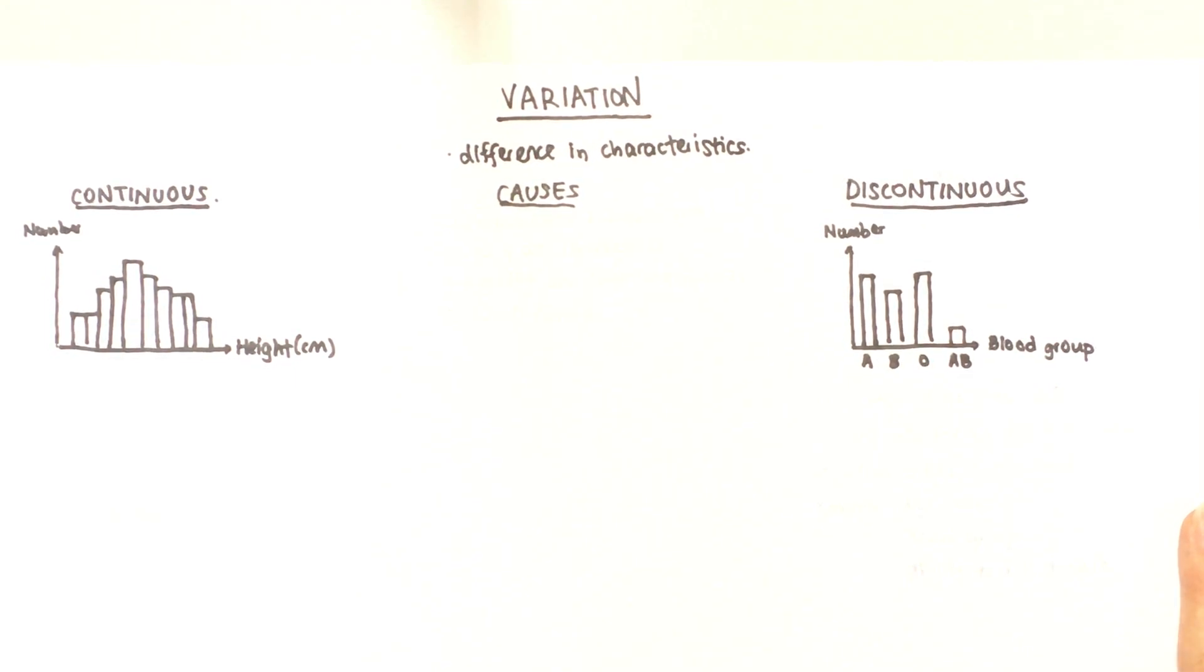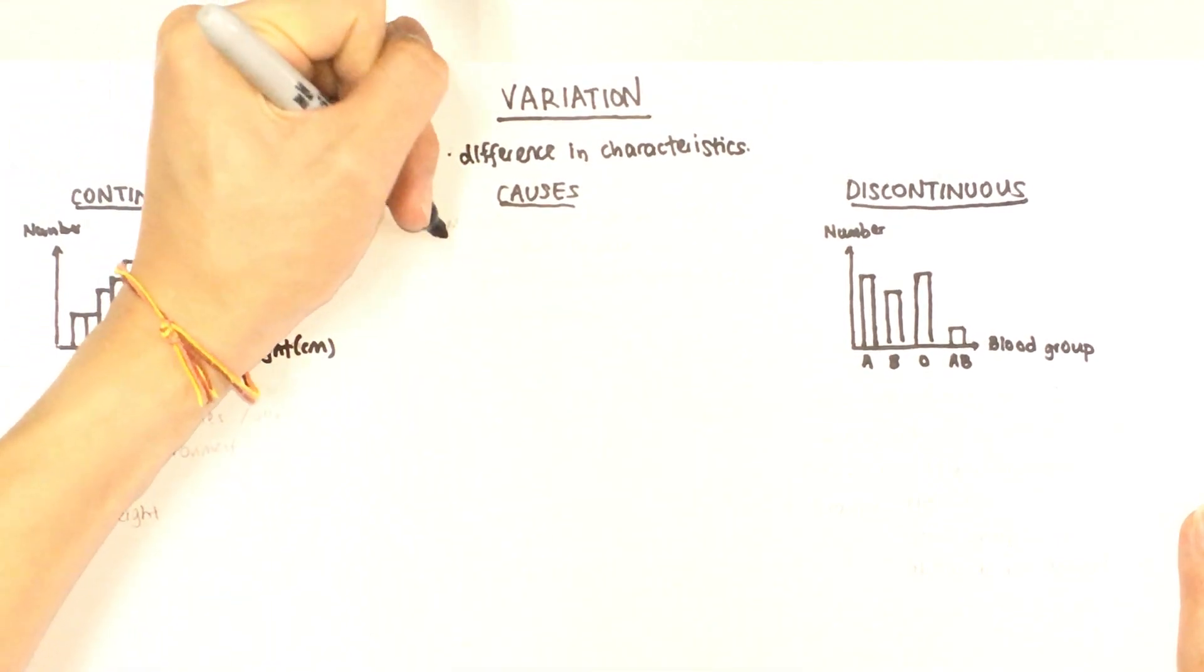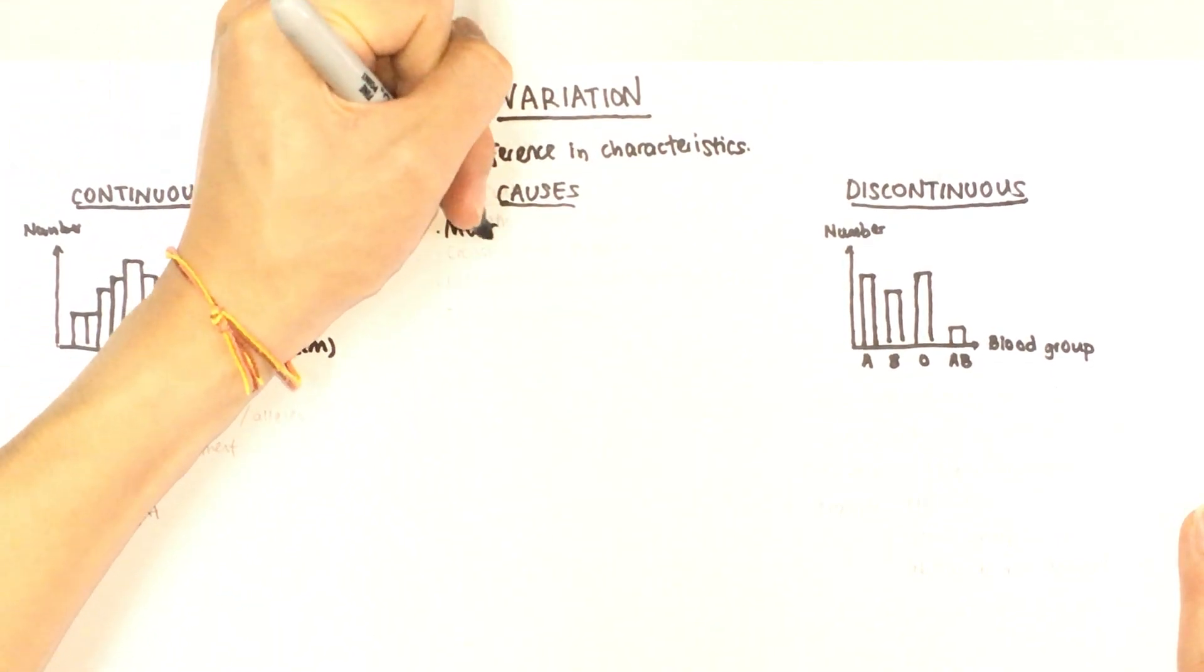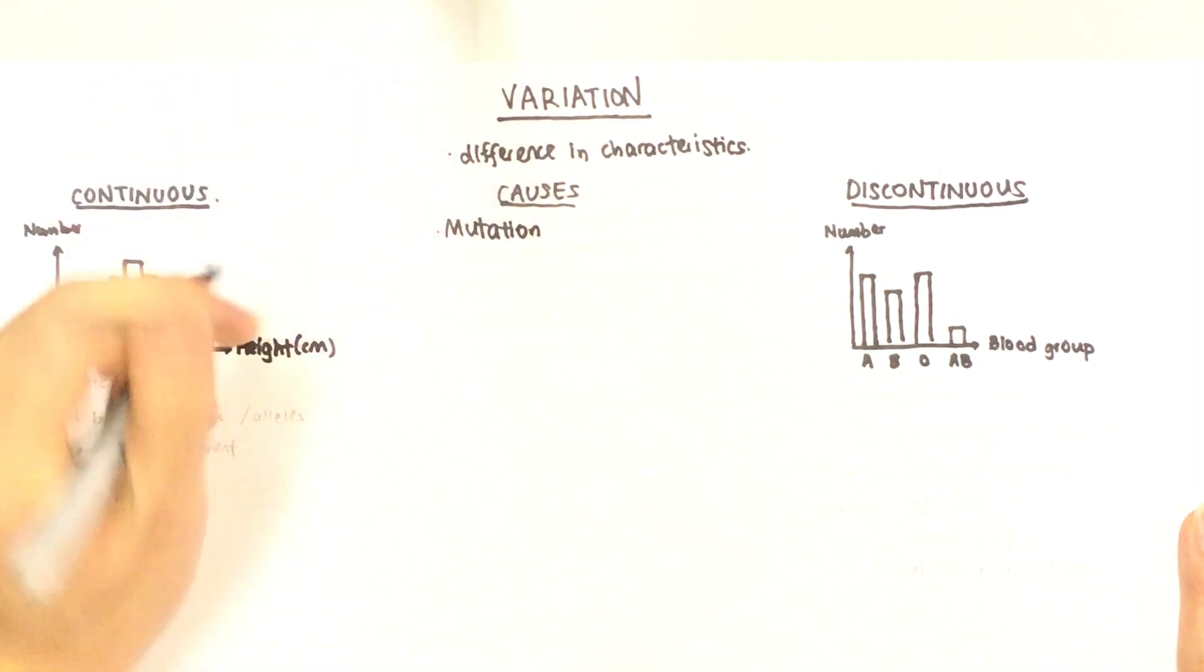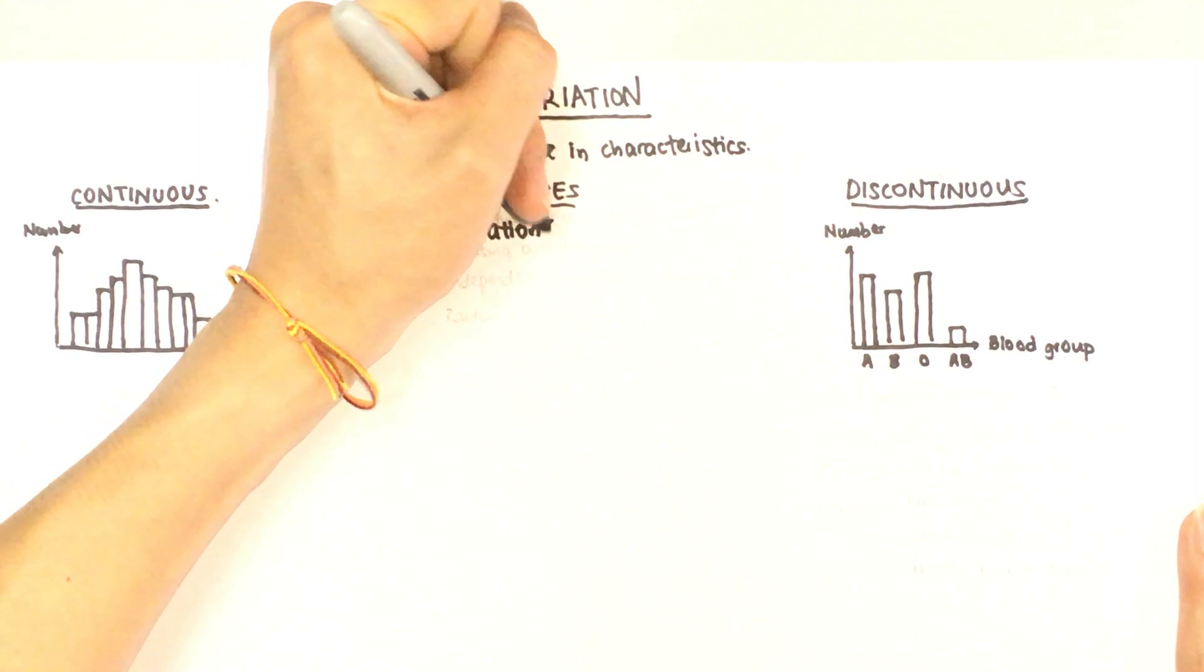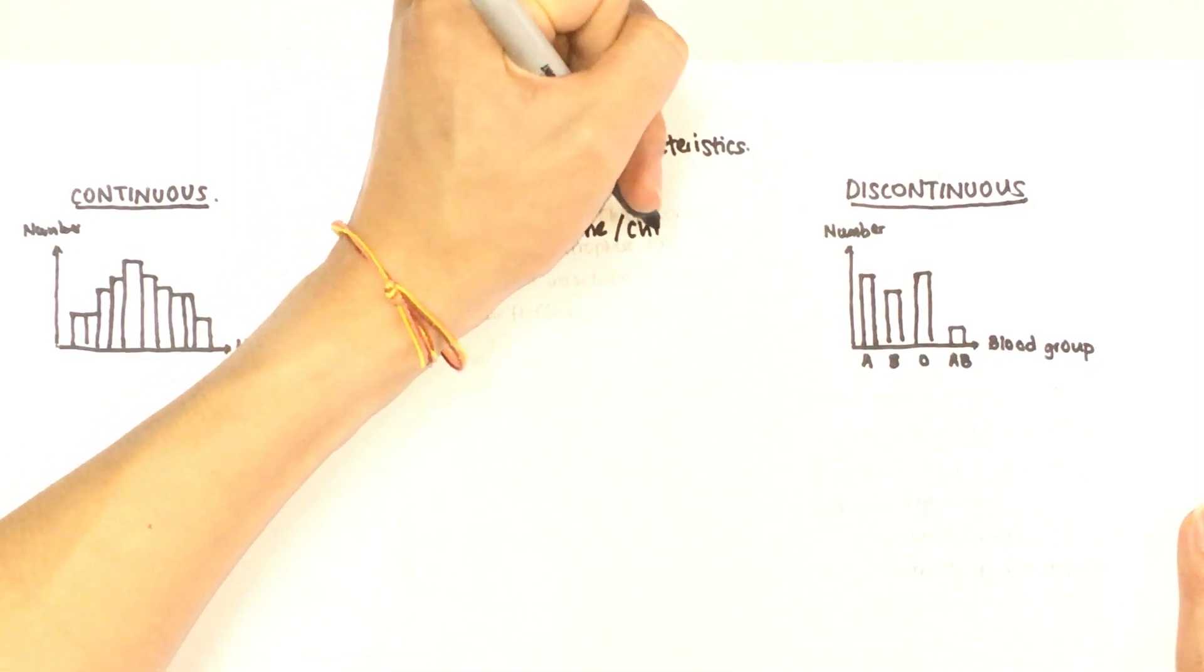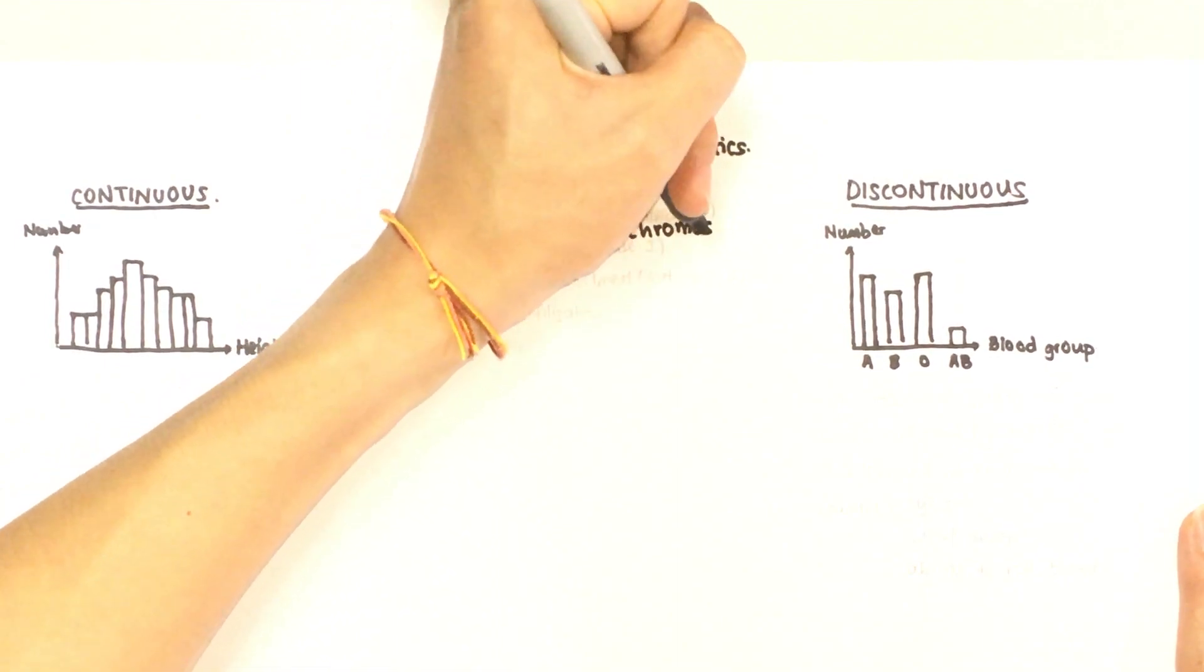So let's talk about the causes of variation. First you have mutation. So mutation, you have two types which can be either gene mutation or chromosomal.